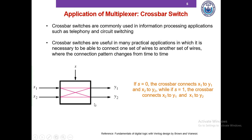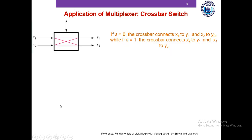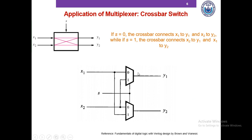We can implement this crossbar switch using multiplexers. When S equals to 0, the 0-labeled data input goes to the output, so Y1 equals X1 and Y2 equals X2. When S is set to 1, the X1 input goes to Y2 and the X2 input goes to Y1, so Y2 becomes equal to X1 and Y1 becomes equal to X2.